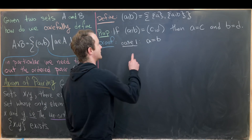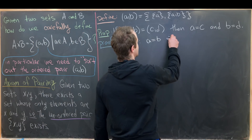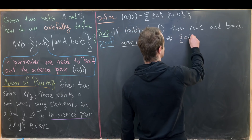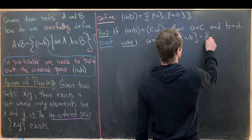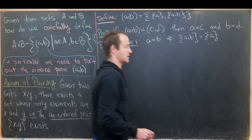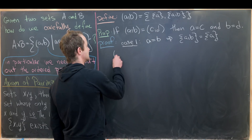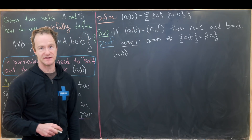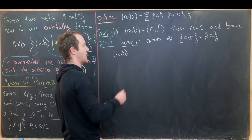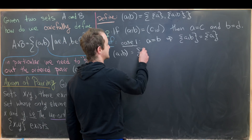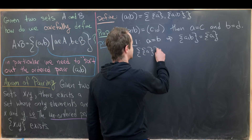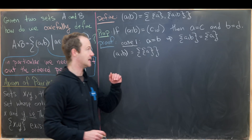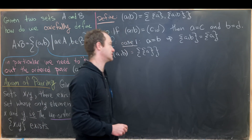If a is equal to b, that tells us that the doubleton {a, b} is really just the singleton {a}. But that means, using our definition of the ordered pair, the ordered pair (a, b) is really just the set containing the set {a} — because {a, b} equals {a}.